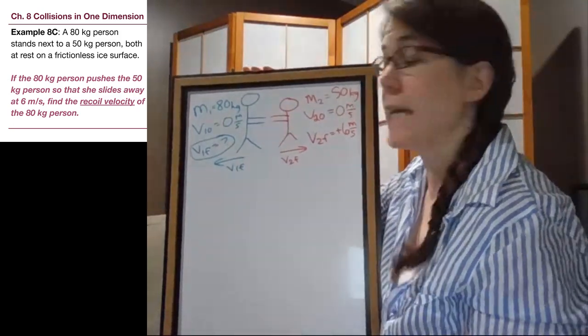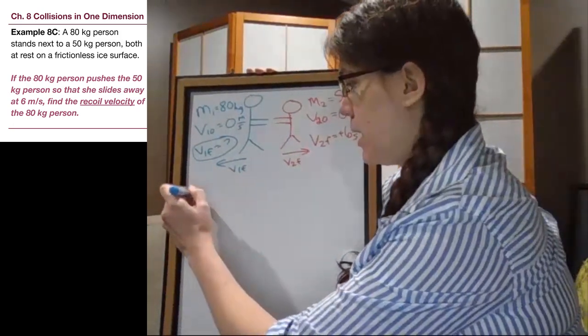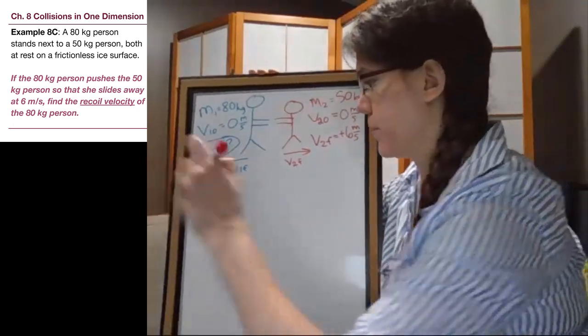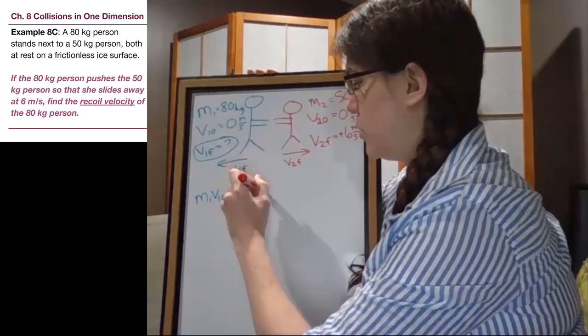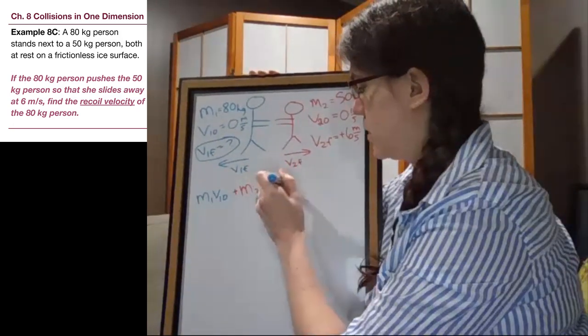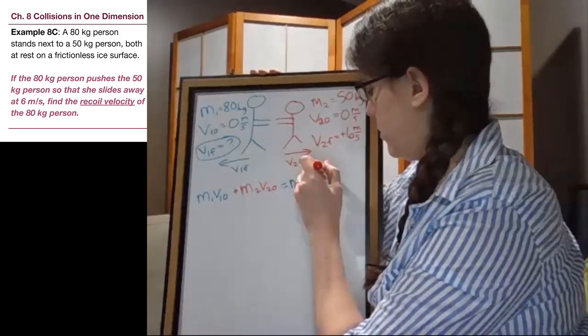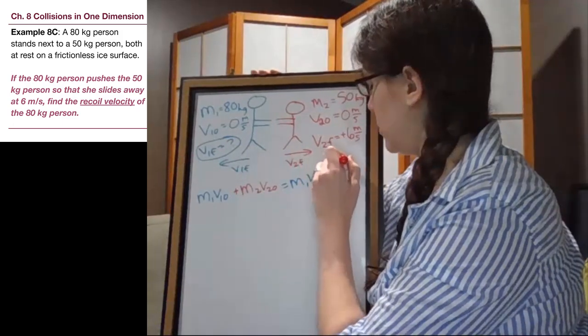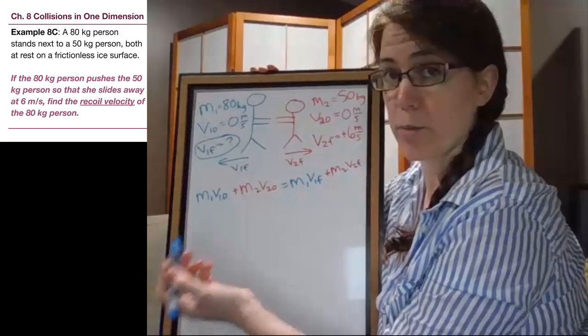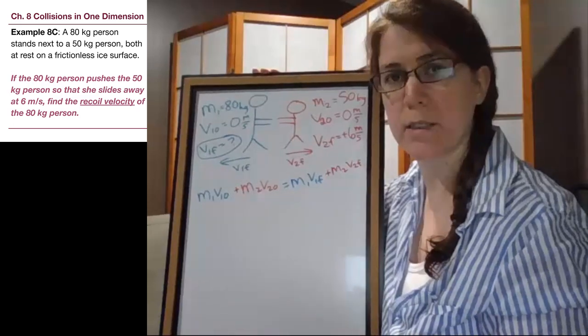So if we think about this situation, what we have is that M1 V1 initial plus M2 V2 initial is equal to M1 V1 final plus M2 V2 final.